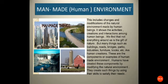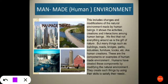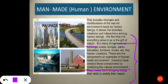The next topic of this chapter is man-made or human environment. This includes changes and modifications of the natural environment made by human beings, and shows the activities, creations, and interactions among human beings. Not everything around us is a gift of nature — many things such as roads, bridges, parks, industries, furniture, books, etc. are human creations. Humans have created these components by modifying the natural environment to satisfy their needs.